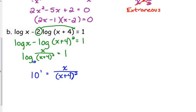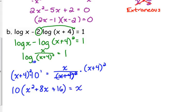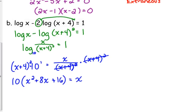Well, to solve this, that x plus 4 squared needs to come out of the denominator, so we need to multiply both sides by x plus 4 squared. x plus 4 squared is not equal to x² plus 16. We've got to FOIL it out. x squared plus 8x plus 16 is equal to x. So we've got 10x squared plus 80x plus 160 is equal to x. Set it equal to 0.